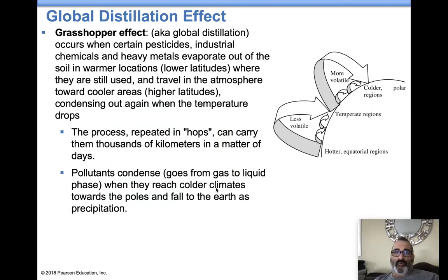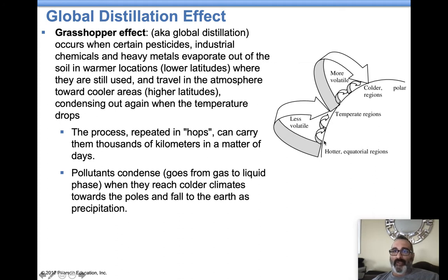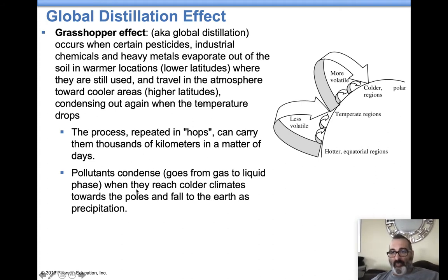The grasshopper effect, or global distillation effect — pollutants evaporate where it's warmer, at lower latitudes towards the equator where farming is taking place. Things like pesticides, if they have a decent residence time, end up drifting north until they condense and fall to the earth. This keeps happening — jumping around the earth — which is why we find pesticide pollutants all over Alaska even though there's no farming there.